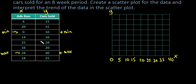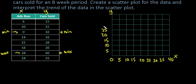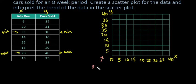Since cars sold goes from 10 to 40, I'll count by 5s on the Y axis as well. Keep in mind you don't always have to count by the same interval on both axes — sometimes your data sets will look different and you'll need a different scale. This is what we call our scale.